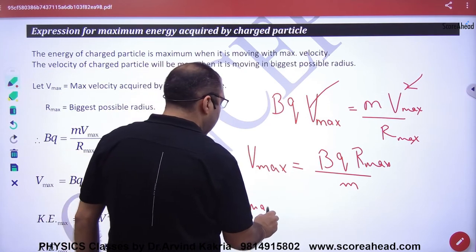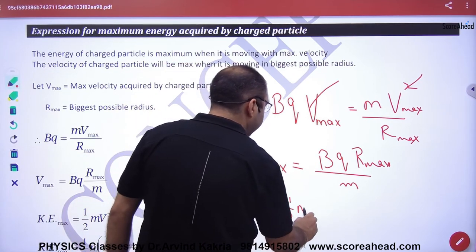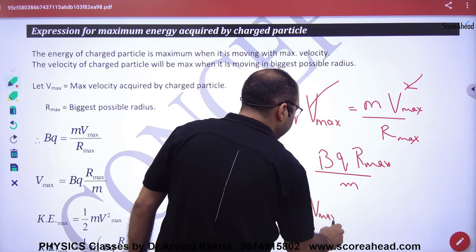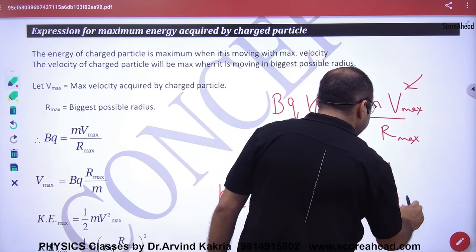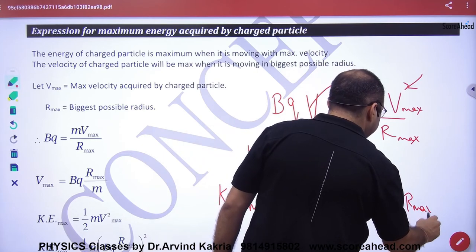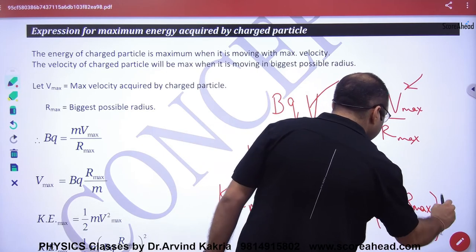...will be equal to half into m into v_max square. Half into m into v_max, Bq*r_max divided by m, the whole square.